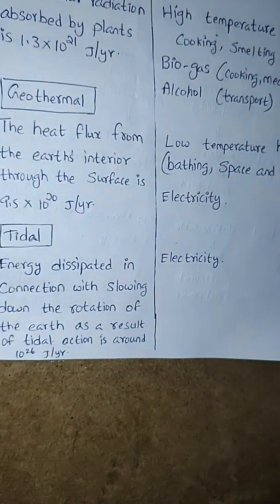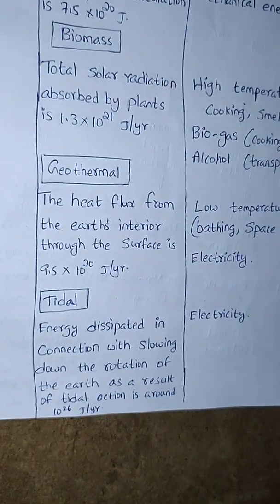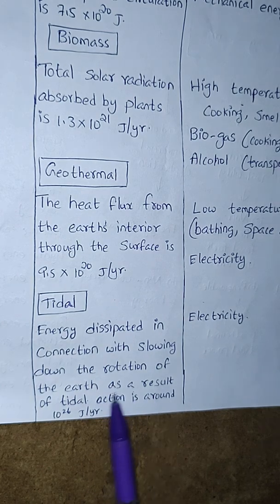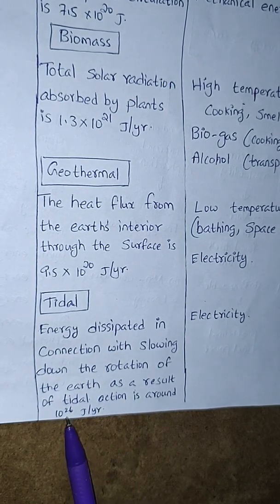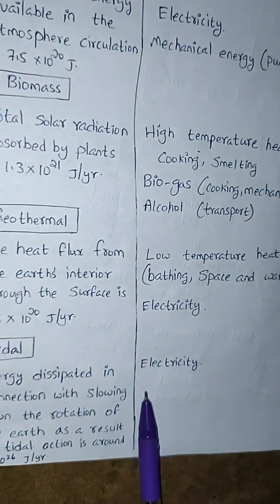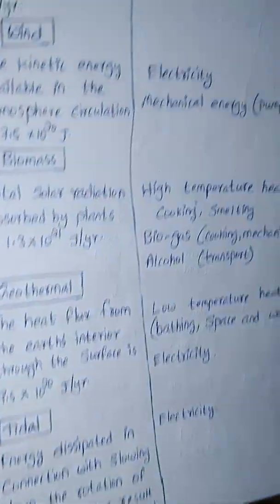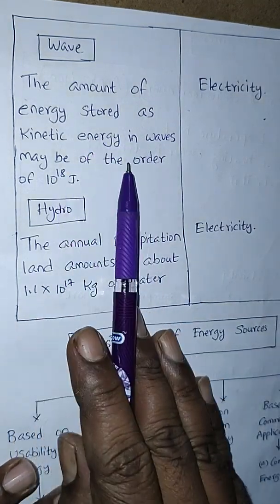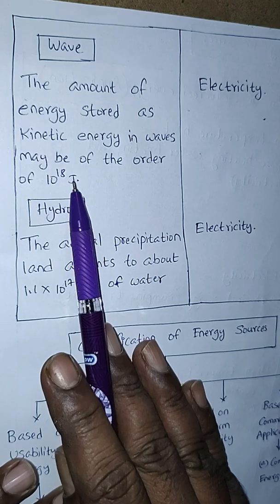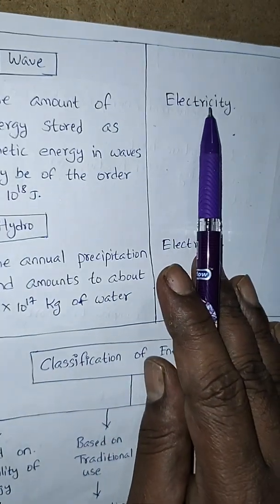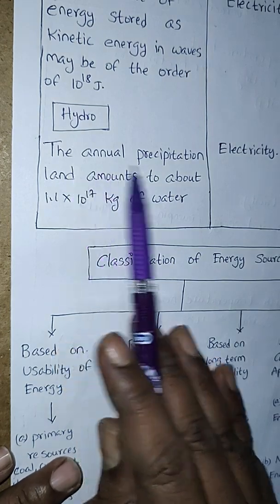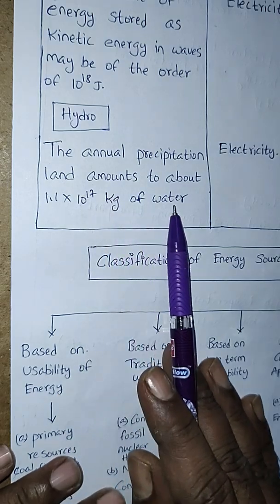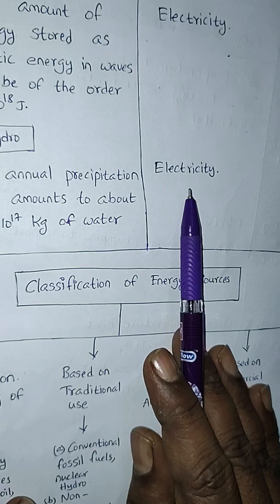Next is tidal energy. The energy dissipated in connection with slowing down the rotation of the earth due to tidal action is around 10²⁶ J/yr, and electricity is generated from it. Waves store kinetic energy on the order of 10¹⁸ J, also generating electricity. For hydro, the annual precipitation on land amounts to about 1.1 × 10¹⁷ kg of water, also generating electricity.